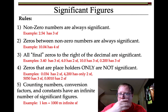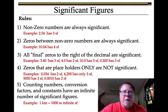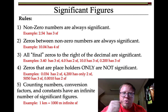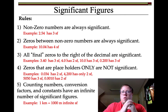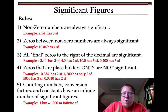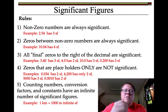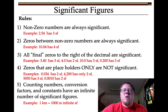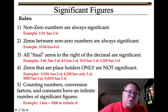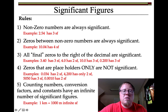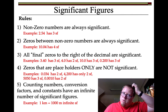Counting is a good one to talk about too. If I say there are 20 people in the room, there's nothing uncertain about that. I counted them — 1, 2, 3, all the way up to 20. There's not 20.1 people in the room; that doesn't make any sense. So 20 people in the room has as many significant figures as you want because you're counting them. Anytime you're counting, using a conversion factor, a definition, or a constant — infinite significant figures.